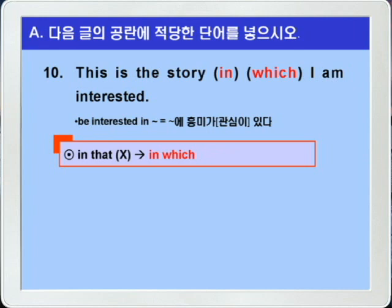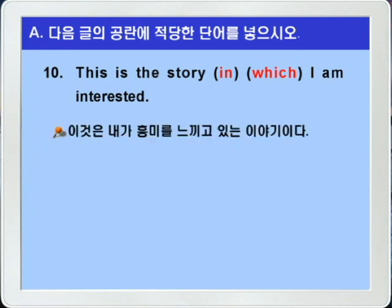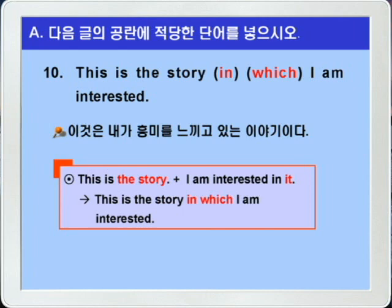'This is the story in which I am interested.' 이것은 내가 흥미를 느끼고 있는 이야기다, 이런 말이 되겠습니다. 이 문장은 'This is the story'와 'I am interested in it', 이런 두 문장이 결합된 문장이 되겠습니다. 정답을 다시 한번 더 확인해보고 11번으로 가겠습니다.